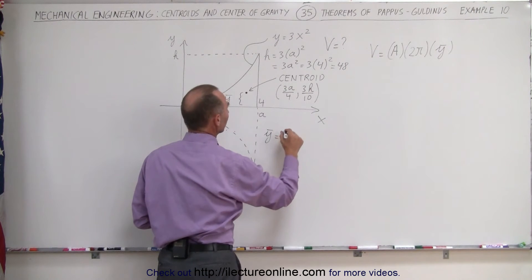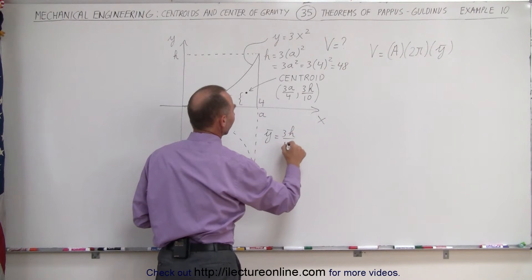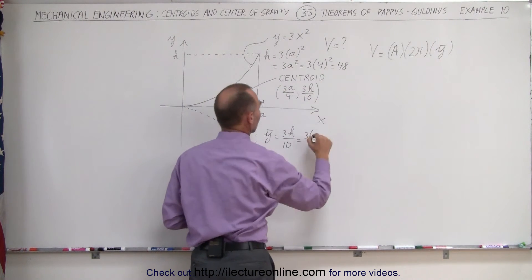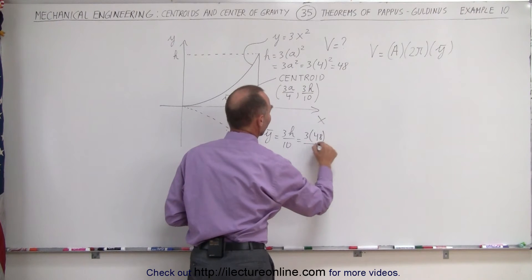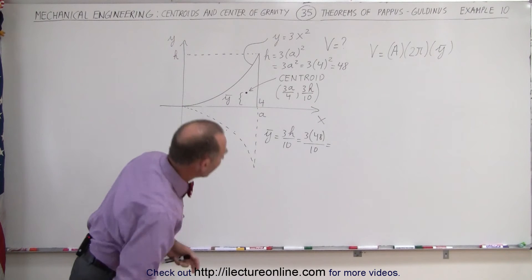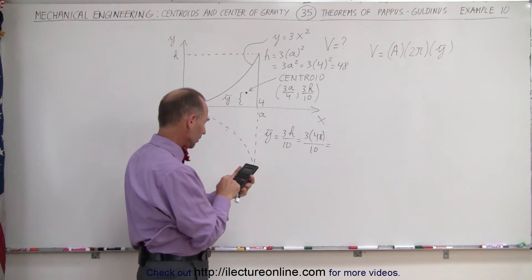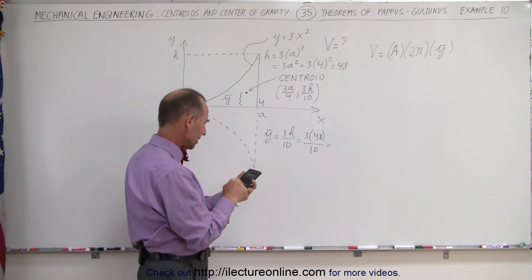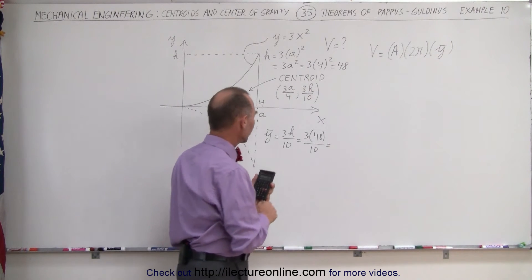The y-coordinate of the centroid is equal to 3h divided by 10 which is equal to 3 times h, in this case is 48, divided by 10. Let's see, 48 times 3, that's 144 divided by 10, 14.4.